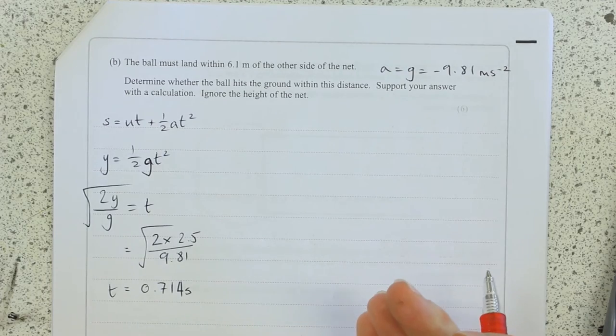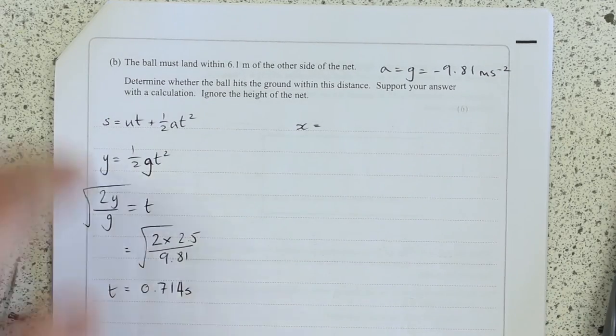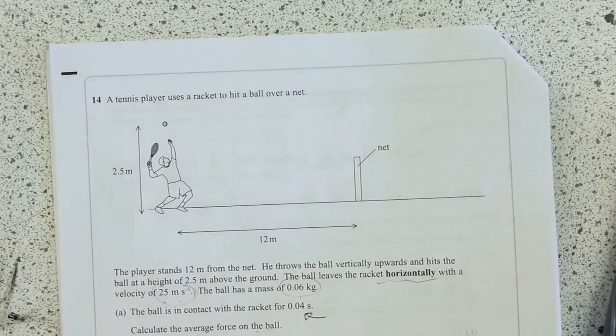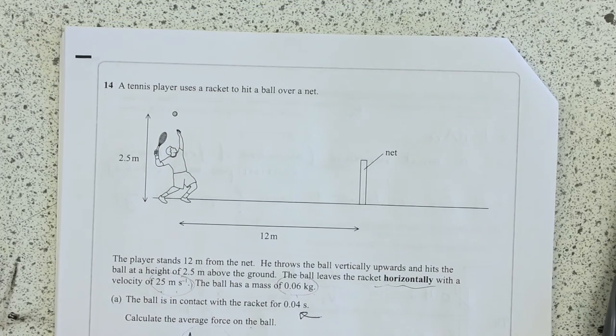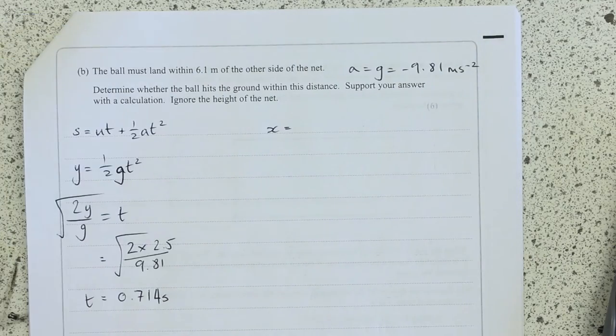And then use the time to calculate the range. So now we want to work out X. What else do we know? We know the speed horizontally, don't we? I'll annotate it on this one. 25 meters per second.